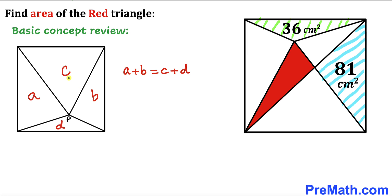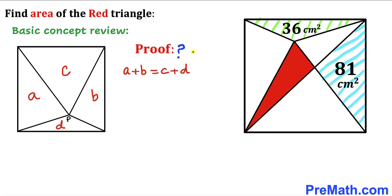Then we can write this as a plus b equals c plus d. In other words, the sum of these two areas is going to be equal to the sum of the other two areas. Do you want a proof? Let me go ahead and show you.